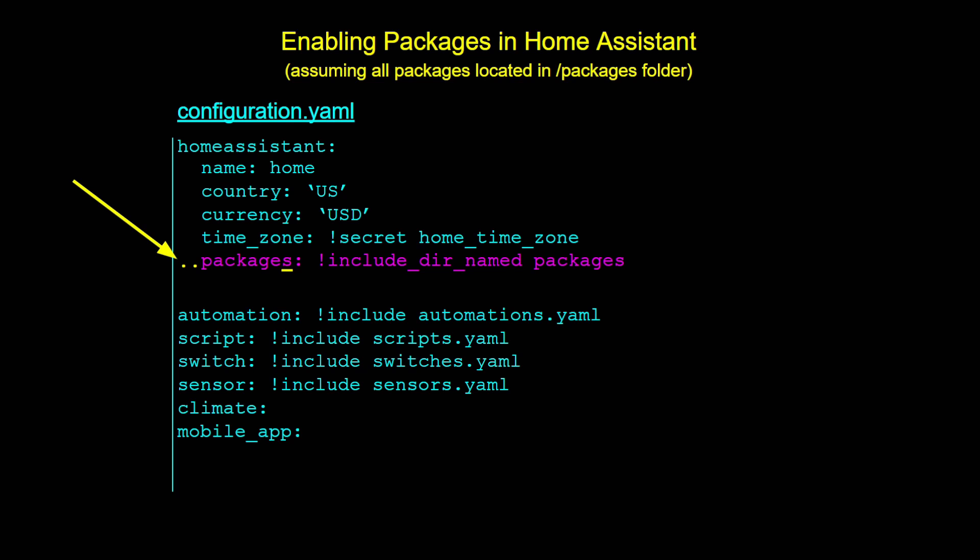So we need to indent it by two spaces, use 'packages' plural, and then use !include_dir_named and then the folder where all of our packages are going to be stored. Once you do that, you can start creating your packages in that folder. When you restart Home Assistant, those will be picked up as part of your configuration. Packages come with some pros and cons, so let's take a look at those next.